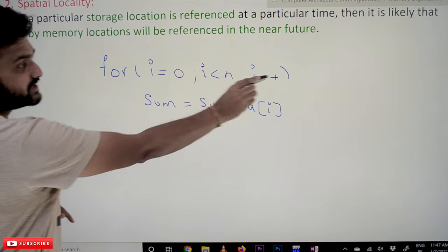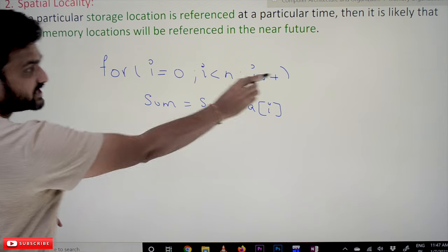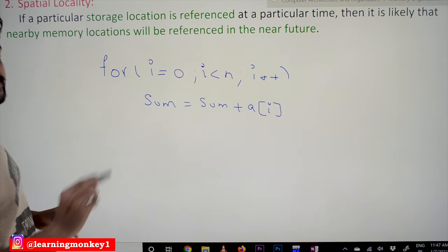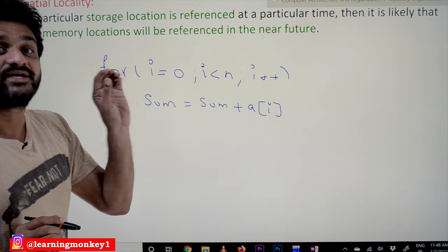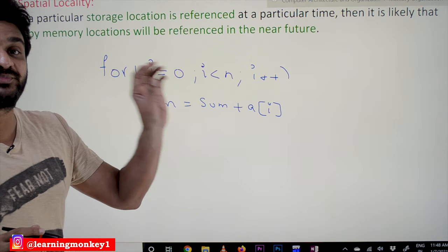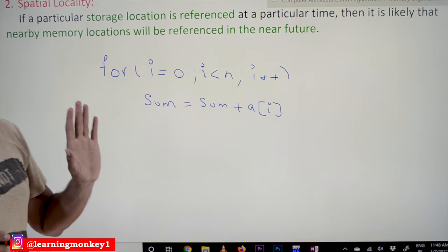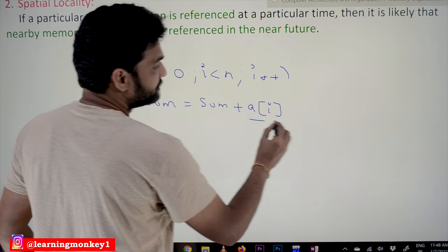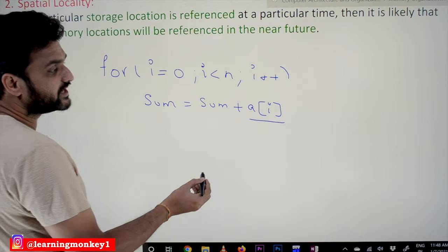After executing this line of code, we are going to access the same location again and again. This is what we call temporal locality — the same memory reference happens repeatedly within the loop.